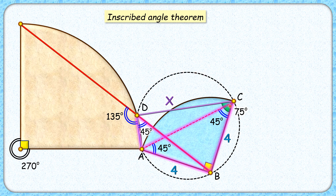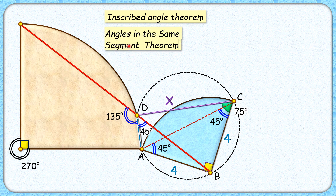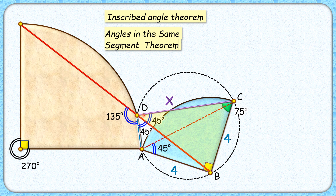Now with respect to this circle, we'll apply the theorem of angles in the same segment. If we look at chord BC, it will subtend the same angle in any one part of the segment. It's subtending an angle of 45 degrees at point A, so in the remaining part of the segment it will subtend the same angle — at point D this angle will also be 45 degrees. Now looking at triangle DCB, by the angle sum property, this angle here will be 60 degrees.